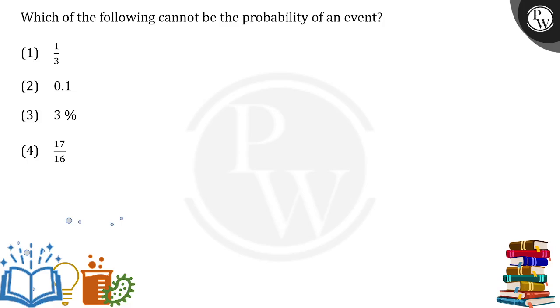In this case they are asking which cannot be the probability of the event. So one thing we need to understand: probability of an event lies in the range of 0 to 1.